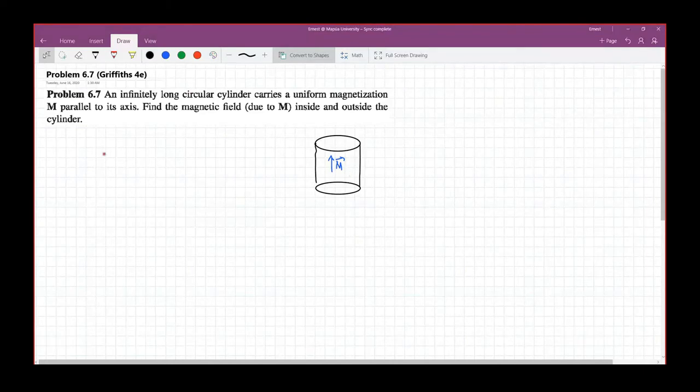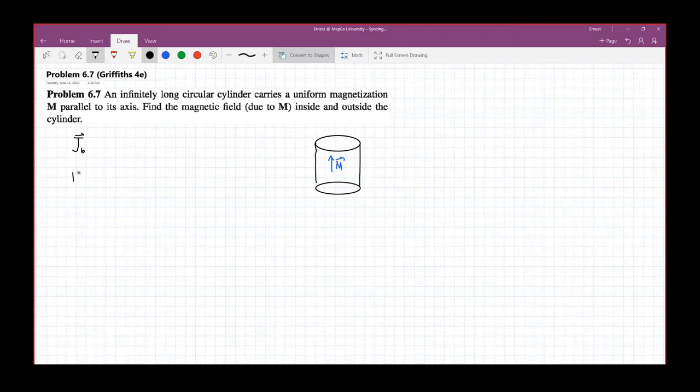So inside the cylinder, if the corresponding curl density J and K will depend on the magnetization... Remember that j is the curl of m and k is the cross product of m and n hat.